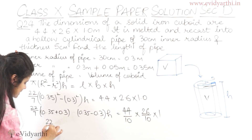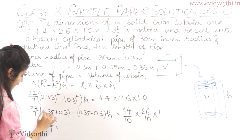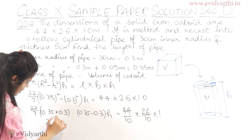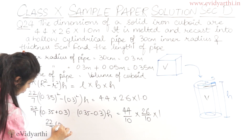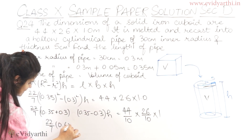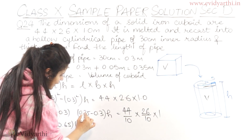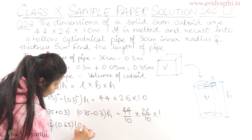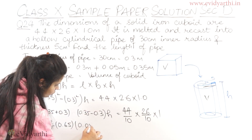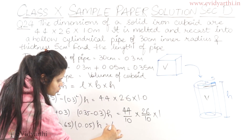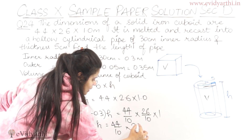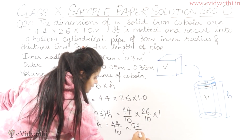Computing the bracket values: 0.35 + 0.3 = 0.65, and 0.35 - 0.3 = 0.05. So the equation becomes: (22/7) × 0.65 × 0.05 × h = (44/10) × (26/10). Removing decimals: 0.65 = 65/100 and 0.05 = 5/100.